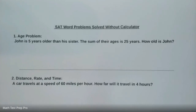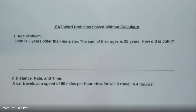The first one is going to be an age problem. John is five years older than his sister, and the sum of their ages is 25 years. How old is John? On this problem, you've got to think strategy. A lot of these problems have the same strategy. First, we're going to assign variables to John's age and his sister's age, then write an equation showing the sum of their ages, and then solve.